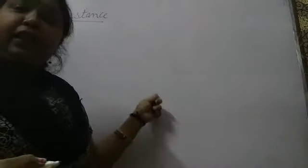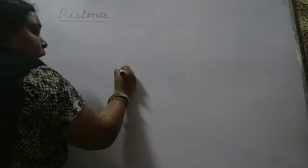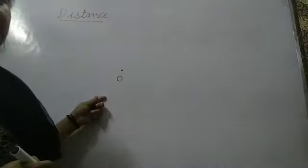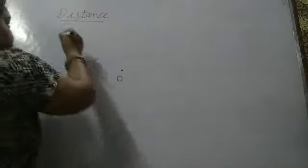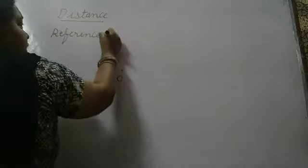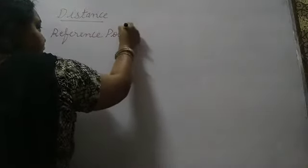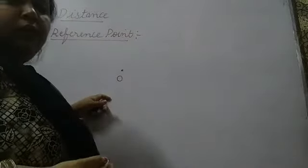If anything is moving in one direction, when direction is involved then it is called displacement. When direction is not involved then it is called distance. I will explain with the help of an example. I will take here a point O. This O is called the reference point. In every path we have one reference point.